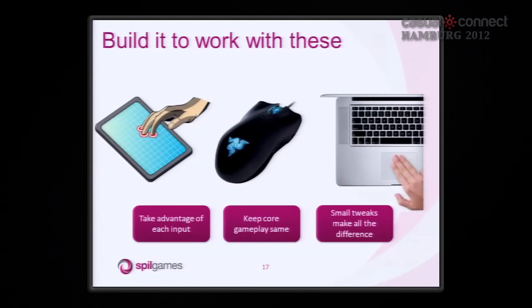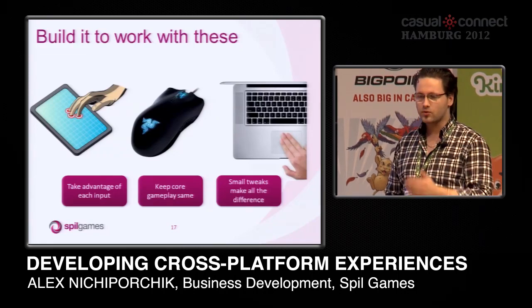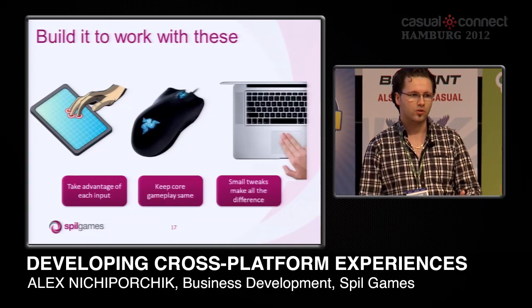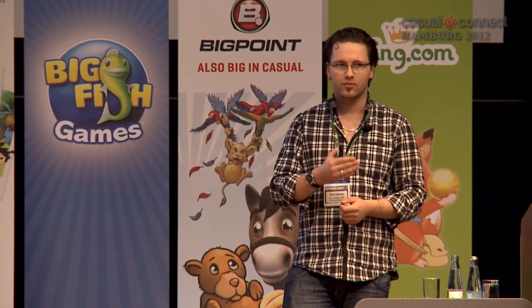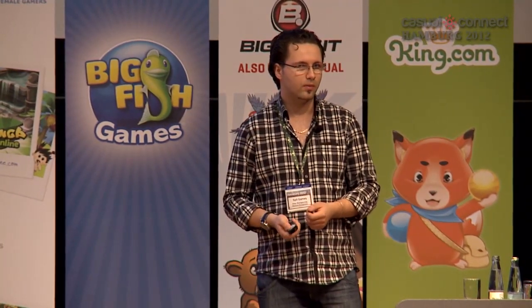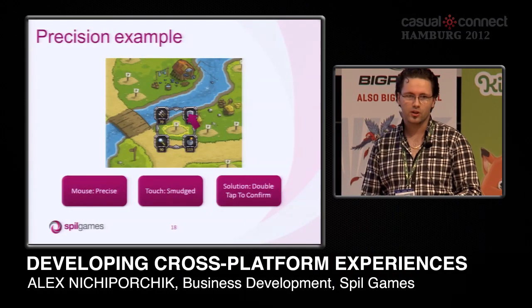Whenever you build something like that, you need to build it to work with different input methods. Keep the core gameplay the same, however take advantage of each and every input method and make small tweaks for each device. So you detect which device it's being played on — whether it's a native app, deployed to a specific app store, or running in HTML5 — and take specific advantages of that platform. A great recent example is Kingdom Rush by Ironhide Studios. In this tower defense game, on the web in Flash, it's as easy as clicking once — one click and it's done.